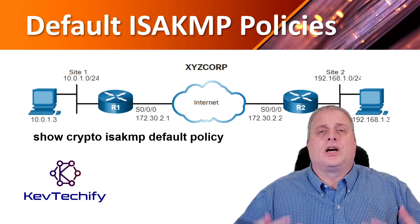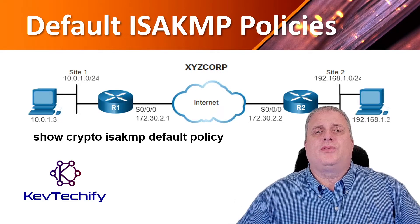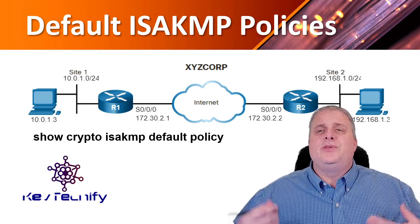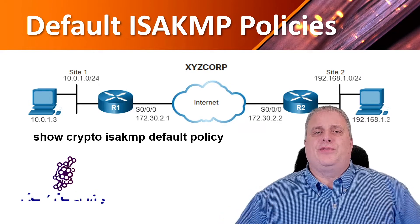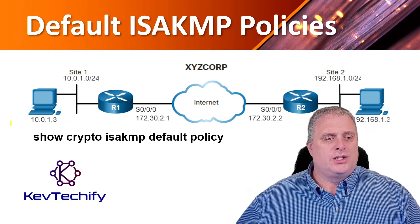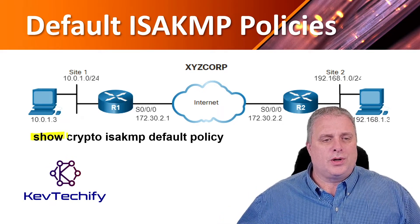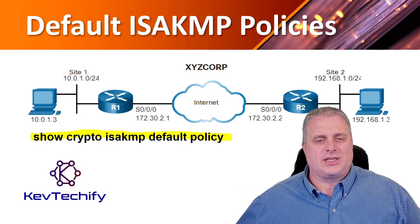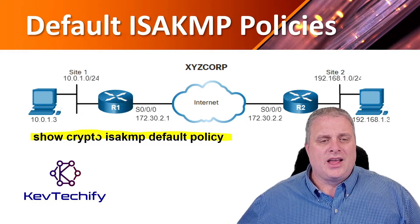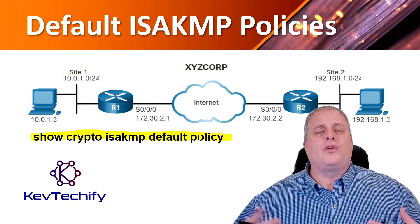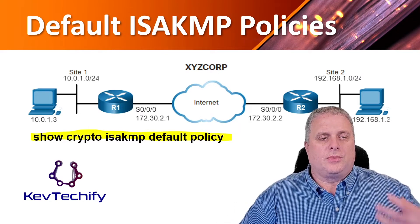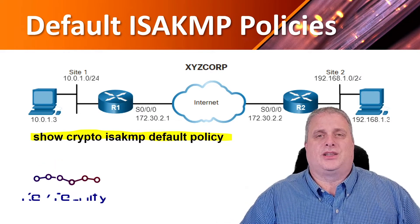The Cisco IOS comes with default ISAKMP policies already in place. To view these default policies, enter the show crypto ISAKMP default policy command. Go ahead and enter that in, and it's going to list out all of your default ISAKMP policies.